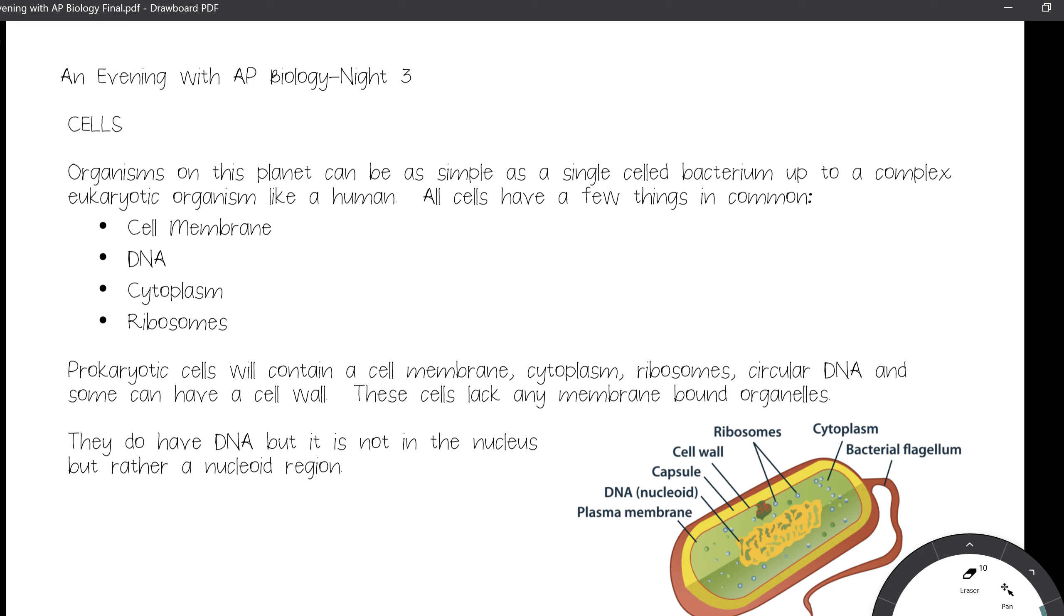Let us start simple with prokaryotes, and in the prokaryotic cell family, bacteria make up many of those prokaryotic cells. A prokaryotic cell will have a cell membrane, DNA, a cytoplasm, and ribosomes. They may have a cell wall, so always remember that all cells will have a cell membrane, cytoplasm, and ribosomes.